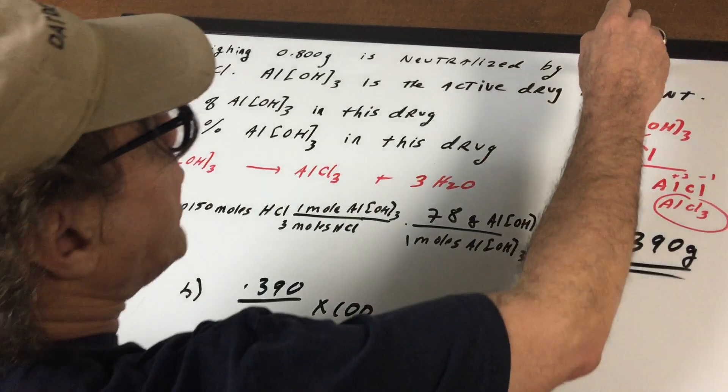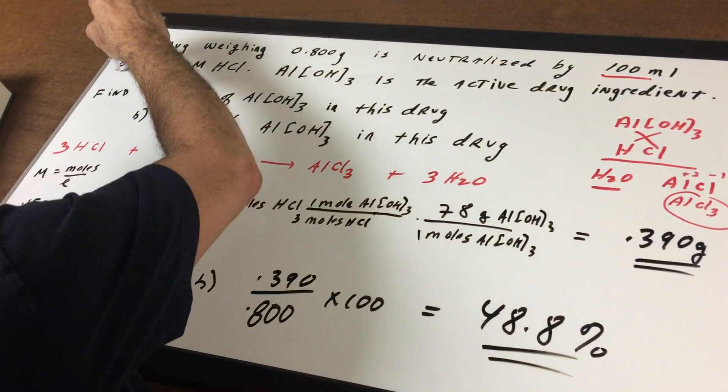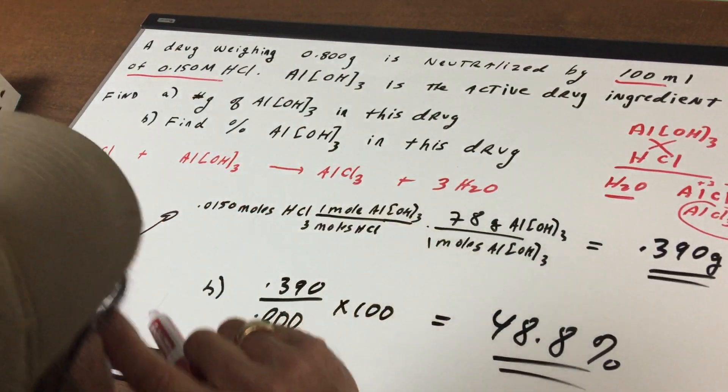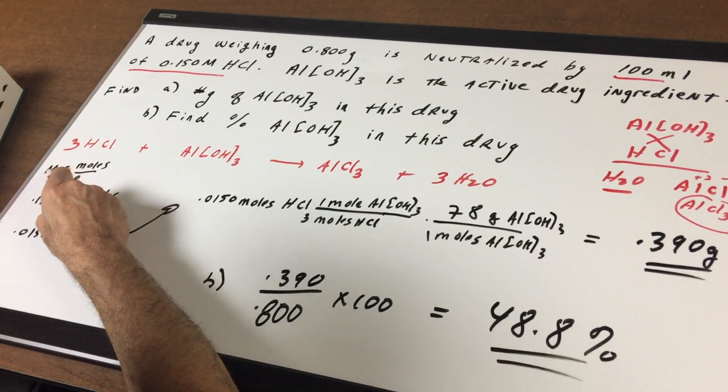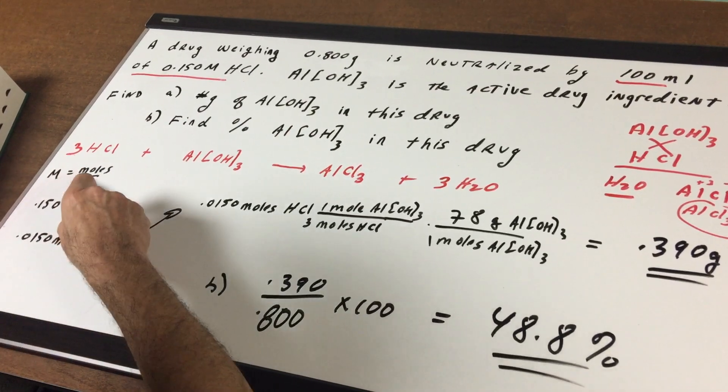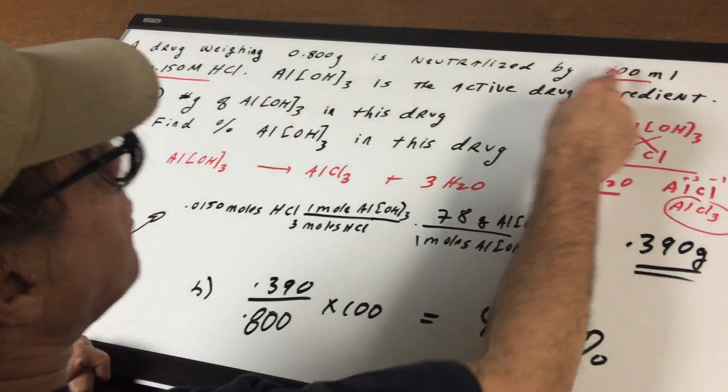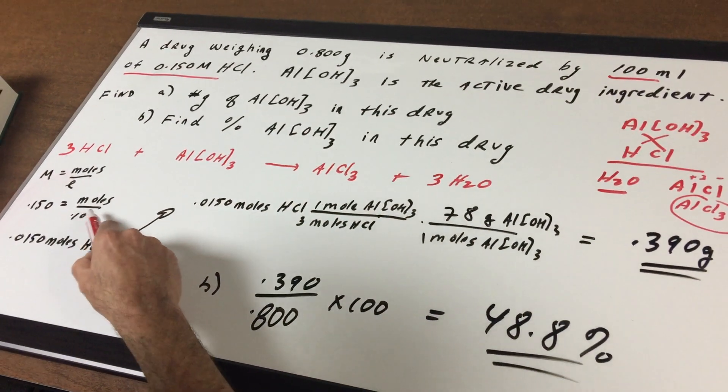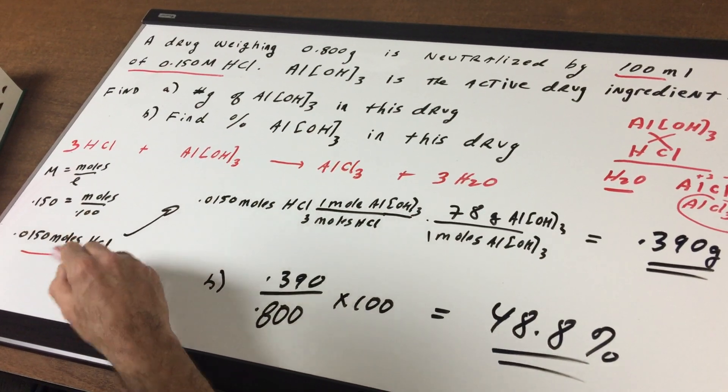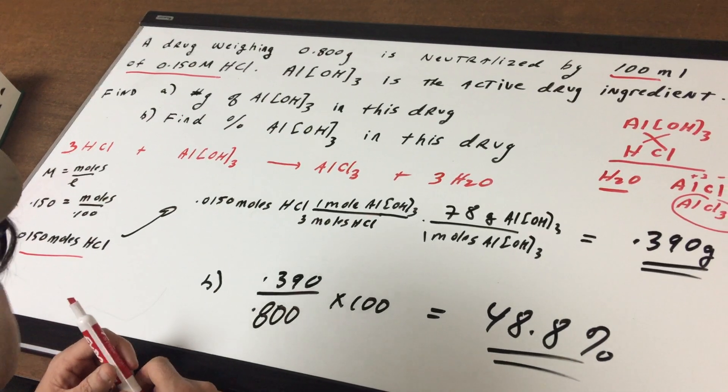Now, where do we begin? I always like to begin with the chemical that give me the most information about, and that's hydrochloric acid. We know molarity is the moles of the solute over the liters of the solution. Well, the molarity is 0.150. The liters is 0.100 liters. And that gives me 0.150 moles of HCl.